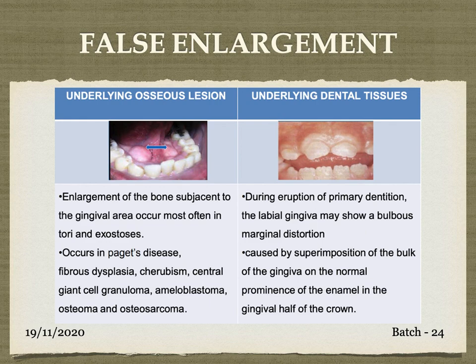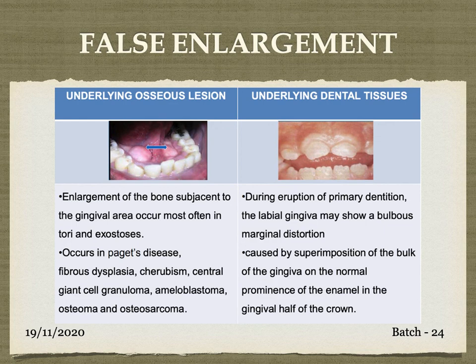The final type is false enlargement — not due to actual enlargement of the gingiva, but due to the underlying bone or dental tissue which appears as gingival enlargement. There is no true increase in the gingival tissue itself; it is the increase in size of the bone or a protruding tooth or malpositioned tooth that presents as gingival enlargement. Enlargement of bone subjacent to the gingiva occurs most often in exostosis or tori, and in conditions such as Paget's disease, fibrous dysplasia, cherubism, central giant cell granuloma, ameloblastoma, osteoma, and osteosarcoma.